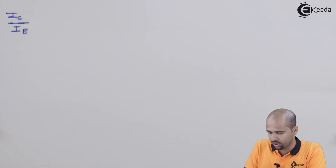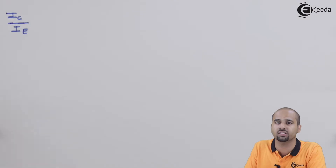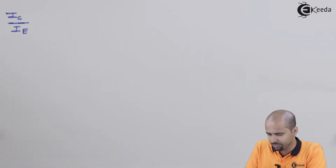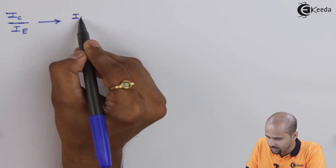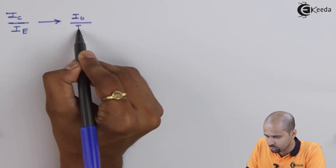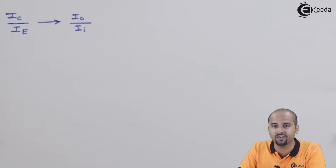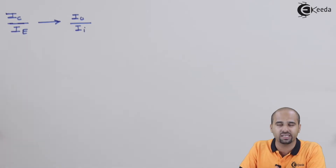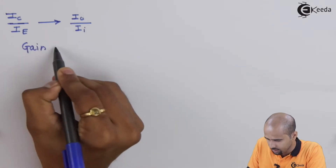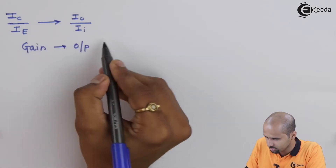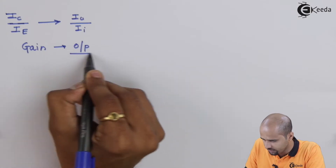If you see this ratio carefully, it is nothing but the ratio of two currents. If I name these as output current and input current respectively, then this is IO divided by II. Output quantity divided by input quantity is nothing but current gain.